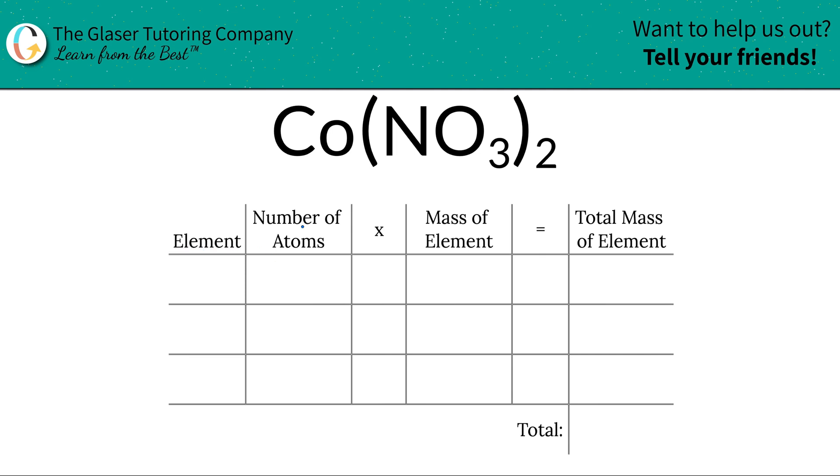Let's take a look at this table to figure that out. To fill out the first column, we need to write down the elements we see. So we see cobalt, CO, we see nitrogen, and we see oxygen.